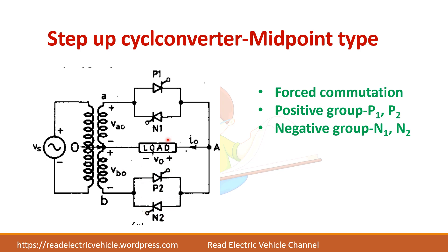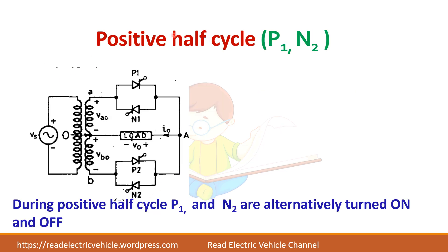Let us consider the positive half cycle. In the transformer secondary, the polarity is plus-minus-plus-minus. During the positive half cycle, the top terminal is plus, so P1 will be forward biased. The bottom terminal is minus, so N2 will be forward biased. Therefore, during the positive half cycle, P1 and N2 are forward biased and can be turned on by applying gate pulses.